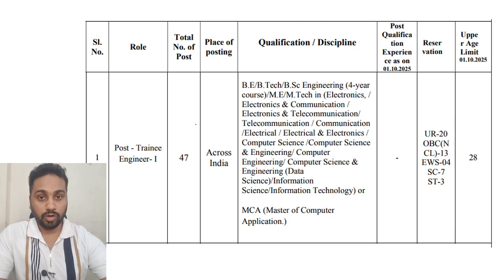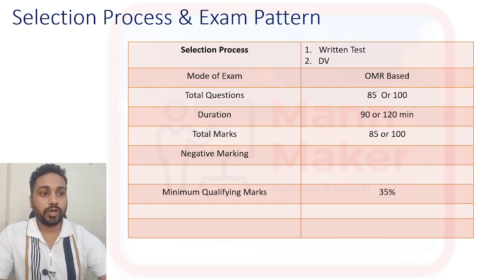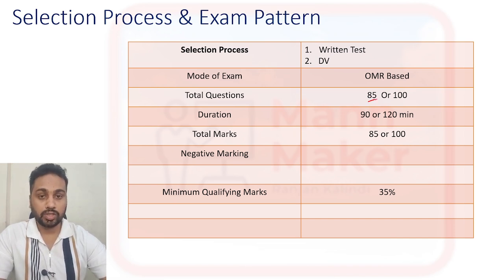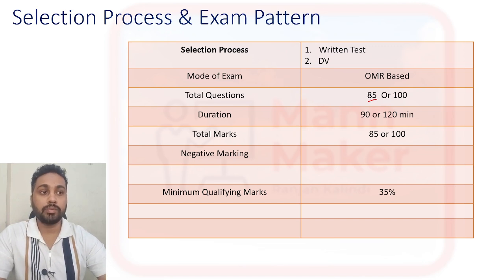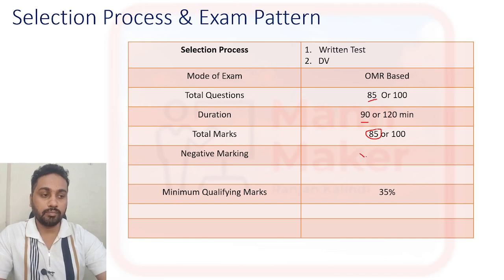As we discussed before when this advertisement came, I told you they are going to follow two patterns for this exam — either 85 marks or 100 marks. Now they have chosen the first pattern: 85 questions. You can check this in your admit card in the instruction page, that is page number two. There it is mentioned there will be 85 questions, you will get 90 minutes, and total marks will be 85 — meaning one mark per question. There is no negative marking in the exam.